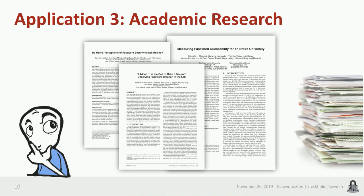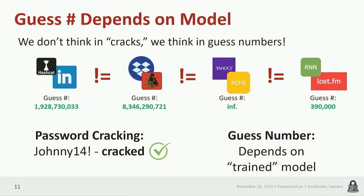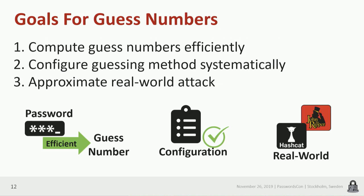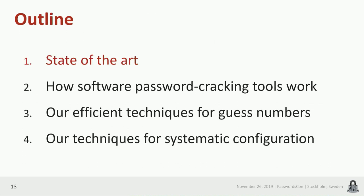I haven't fully defined the guess number yet. A guess number is calculated for a specific attack using a specific algorithm with a specific configuration. So the guess number highly depends, for example, on the input data — the password leak you're using. We defined some goals for guess numbers: we want three properties. First, the process must be efficient. Second, we want a systematic approach to configure the password guessing attack based on a large file of plain text passwords as input. Finally, we want the attack to be real, so the guess number should be based on real-world data.